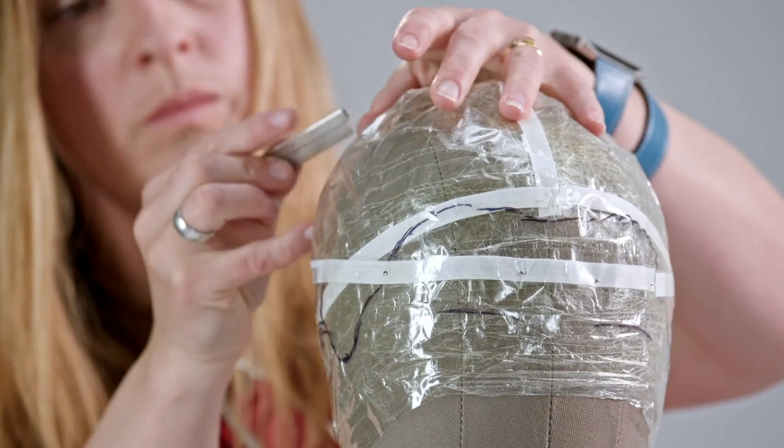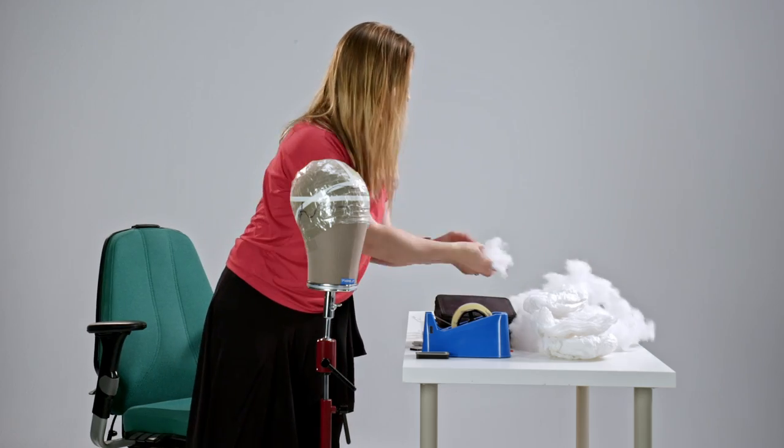The easiest way to put the padding in is to use a craft knife and just slash it in a few places.